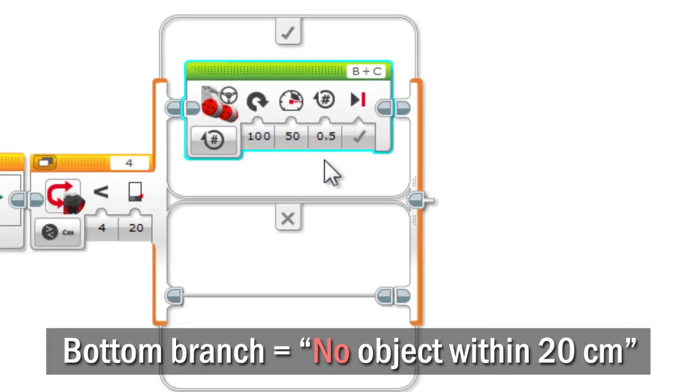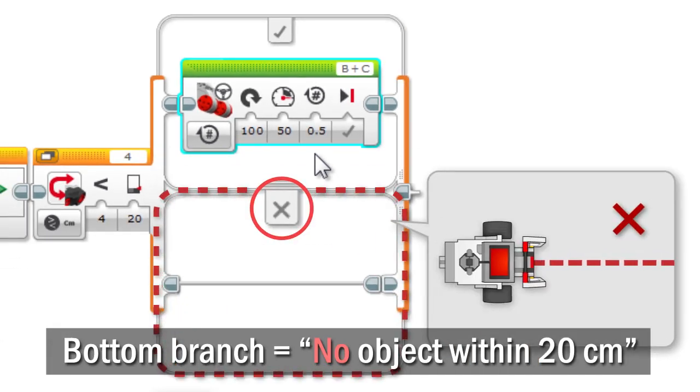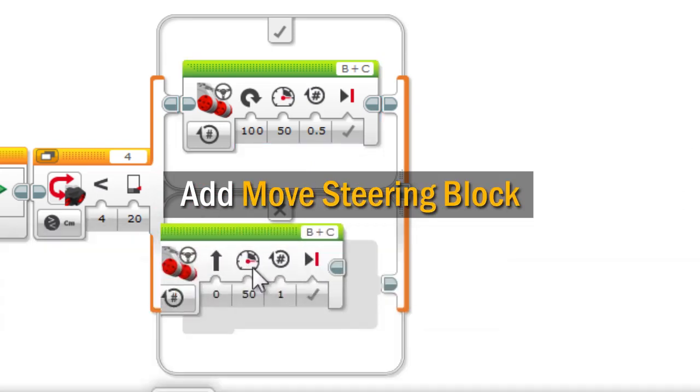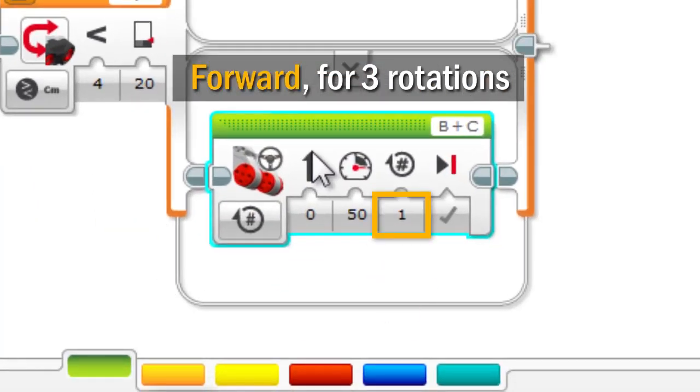In the bottom branch, meaning no there isn't an obstacle within 20 centimeters, place a move steering block set to move forward for 3 rotations.